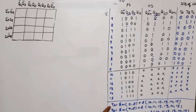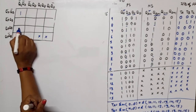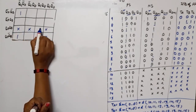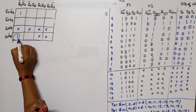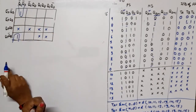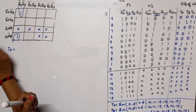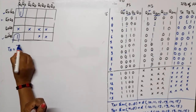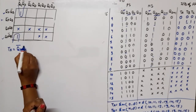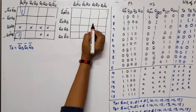For the K-map of TA, the minterms are 0 and 8, with don't cares at 10, 11, 12, 13, 14, 15. We simplify to get one pair. From the first and last rows and the column grouping, TA equals QB̄ · QC̄ · QD̄.